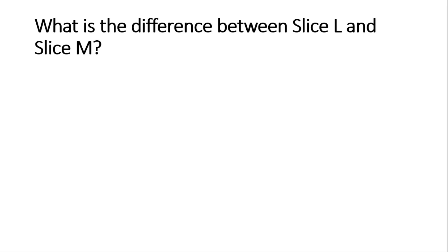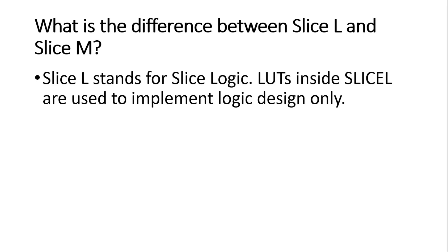Please write your answer in the comment section and we will discuss there. The first type of slice is called slice L, which stands for slice logic. These slices are used for implementation of digital logic. The LUTs inside slice L are used for implementation of digital logic, but these LUTs cannot be used for implementation of distributed memory. This is a very important point — the LUTs inside slice L cannot be used for implementation of any type of memory; they are only used for implementation of digital logic.